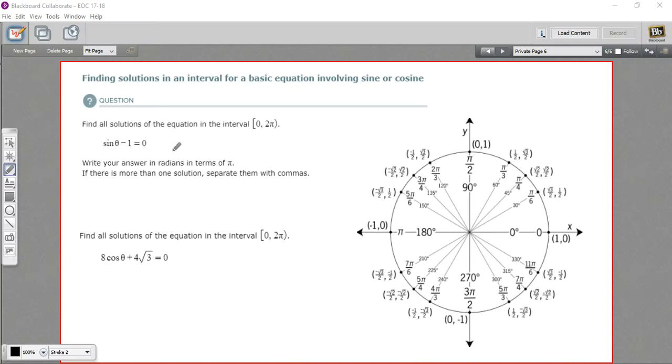In these problems, we need to find all the solutions for a particular trigonometric equation on a certain interval. In this case, the interval is going to be from 0 to 2π, so basically one time around the unit circle.